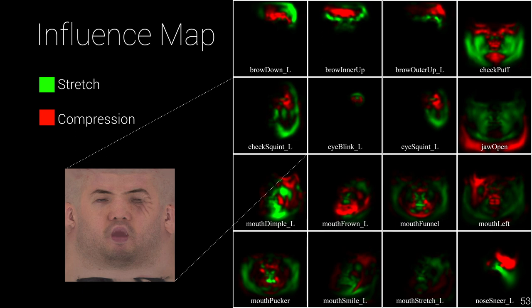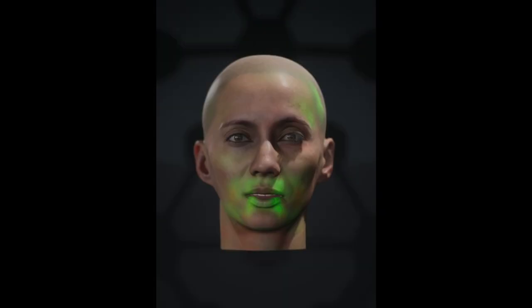By computing the deformations of the blend shape expressions the same way, we can generate influence maps that define how each blend shape corresponds to the overall stretching and compression of the skin. The final influence determines how much of the neutral, stretch, and compression texture should be sampled to generate the final combined texture. To reduce the number of texture slots in the shader, the influence maps get combined into a texture atlas which can be sampled on multiple occasions. When animating, the blend shape values get updated, which in turn causes stretch and compression that we can visualize with colors.